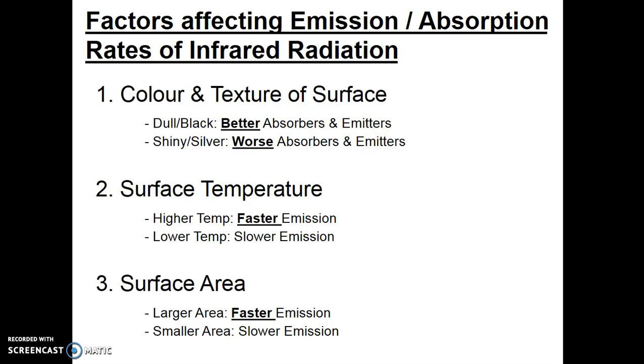Today's video, we just touched on three things. First thing, color and texture of surface. As you can see, dull black surfaces are both better absorbers and emitters of radiation. Shiny silver surfaces are always worse emitters and absorbers. Surface temperature, the higher the temperature, the faster the emission, and the lower the temperature, the slower the emission.